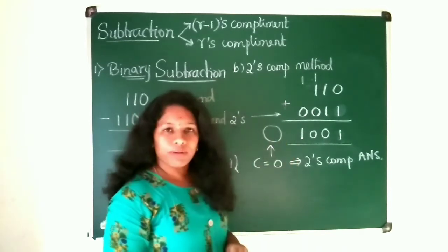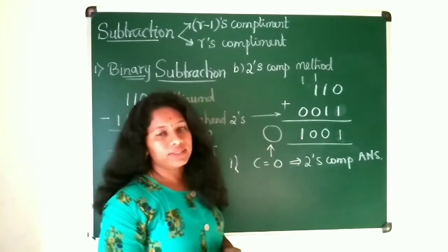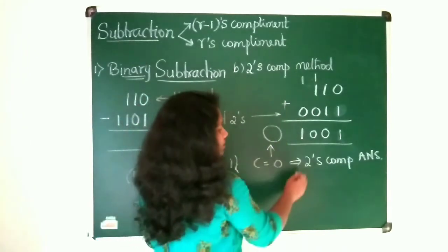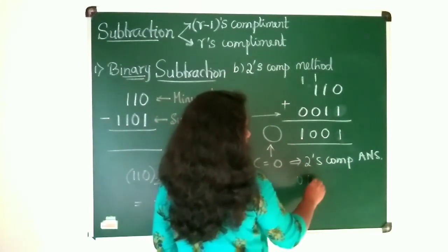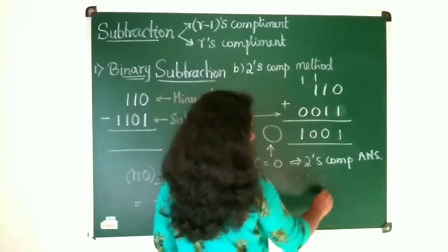How to take 2's complement? First take 1's complement then add 1 to it. So let us take 1's complement for this answer. 0, 1, 1, 0. Add 1 to it.